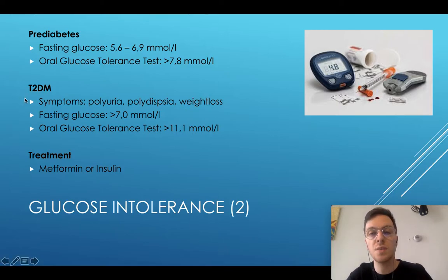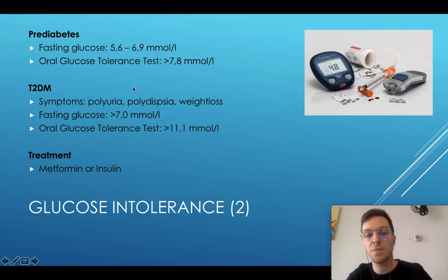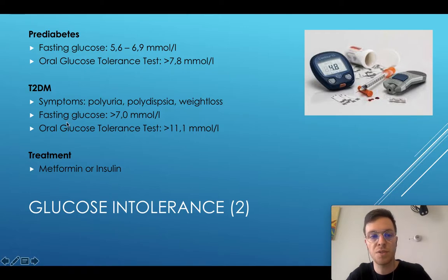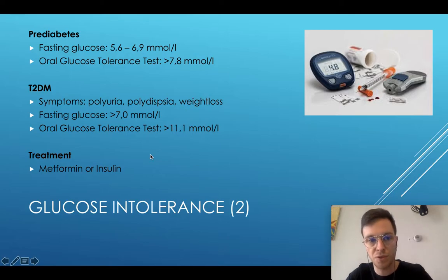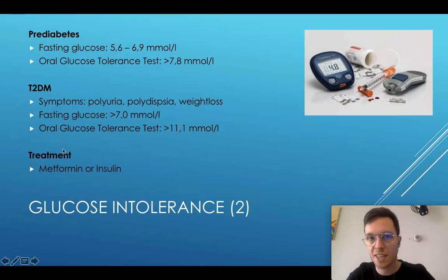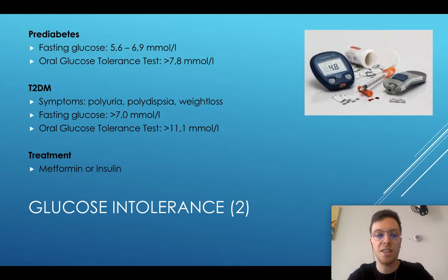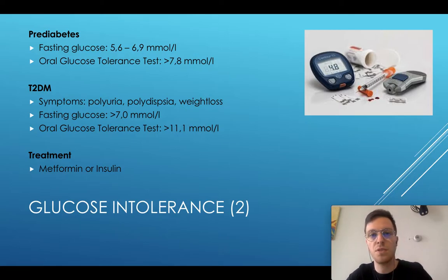There is type 2 diabetes when the child has symptoms like polyuria, polydipsia, weight loss, a fasting glucose of more than 7 mmol/L, or a glucose tolerance test of more than 11.1 mmol/L. Treatment would be lifestyle interventions like more exercise, weight loss, and healthy food, but if this is insufficient and there is type 2 diabetes, you should also start metformin or insulin for the child.